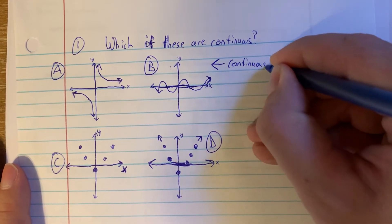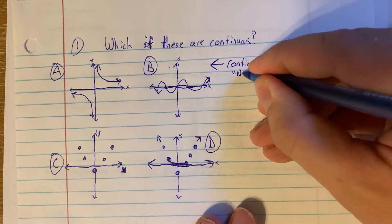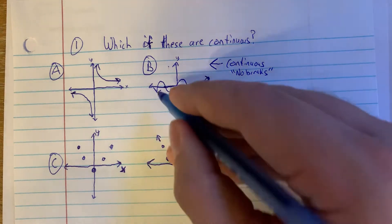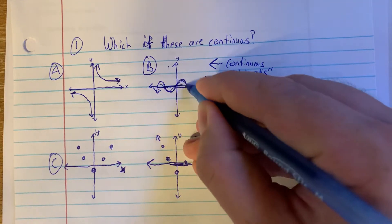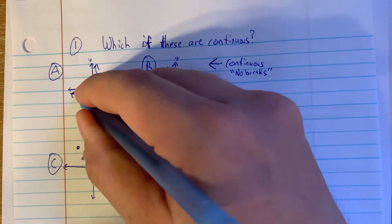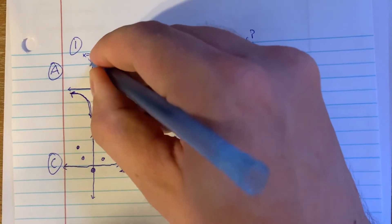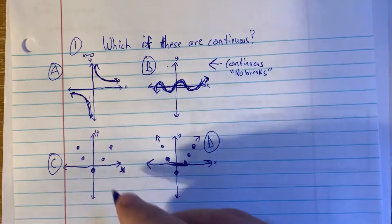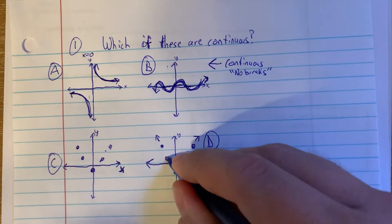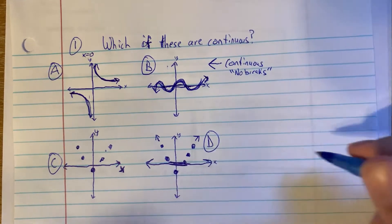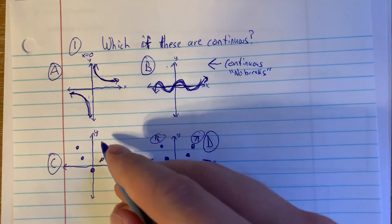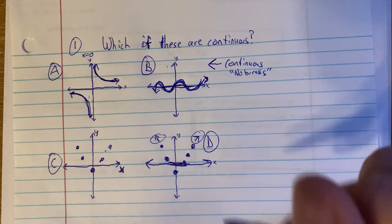This one is considered to be continuous everywhere. Remember that continuous means there are no breaks in it. Another way we think of it in a pre-calculus sense is that we can make it the entire way without picking up our pencil. This wave—we can make without ever lifting up our pen. It's continuous; there are no breaks. Whereas the first one has a break at x equals zero—there's an asymptote. So the function is not continuous there.